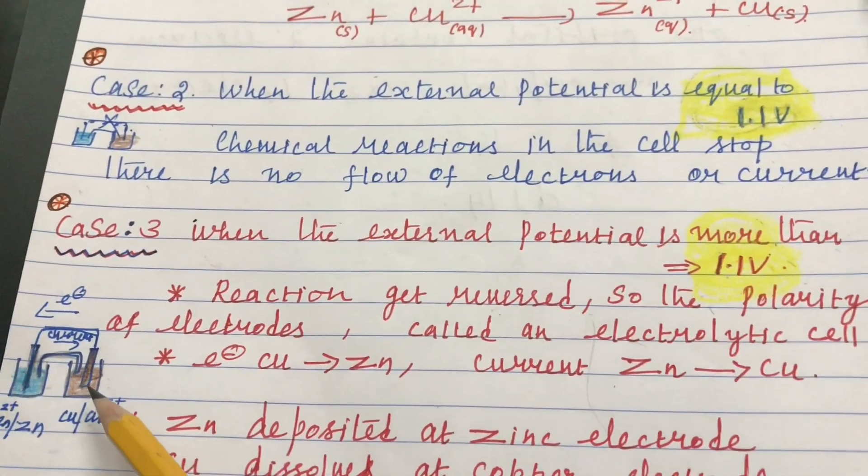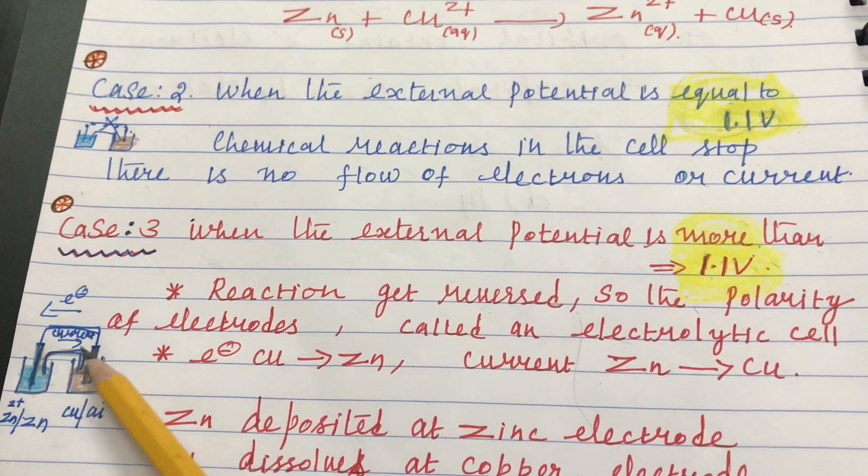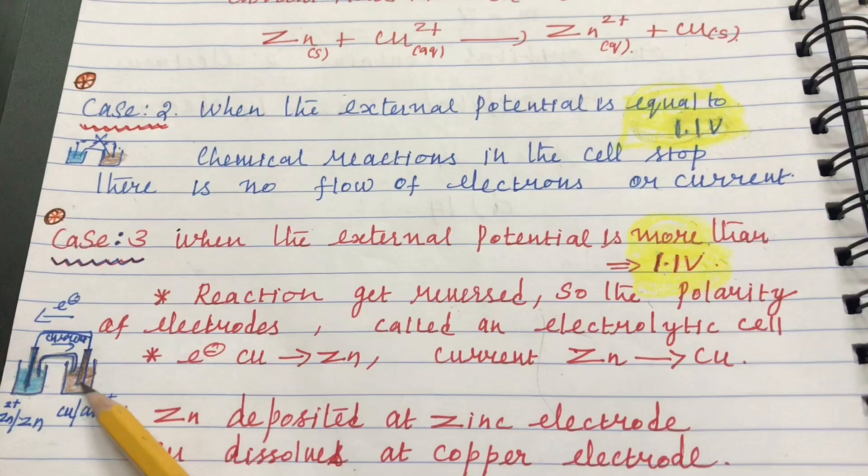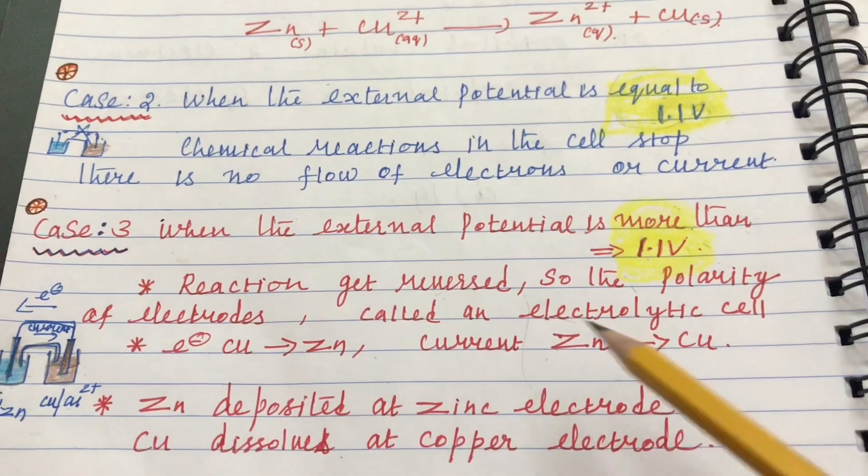Here, the electron flows from copper to zinc, and current flows from zinc to copper.